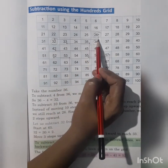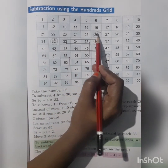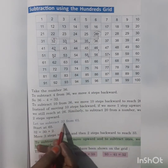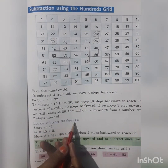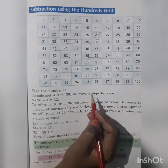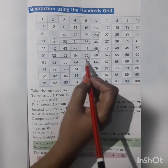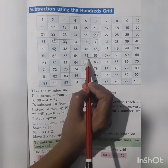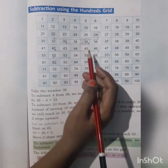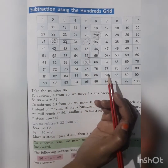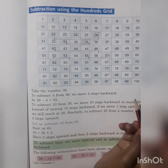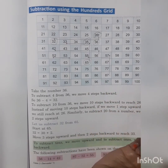Now let's subtract 32 from 65. This is 65. Subtracting 32 means we move 3 steps upward: 1, 2, 3, and then 2 steps backward to reach 33.